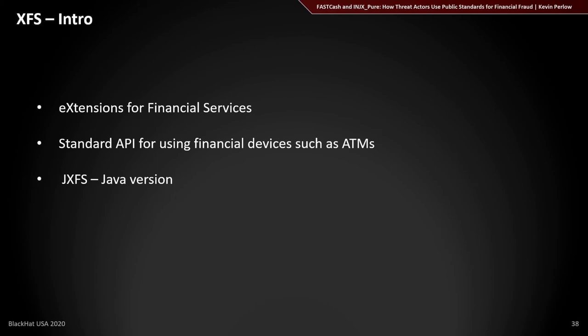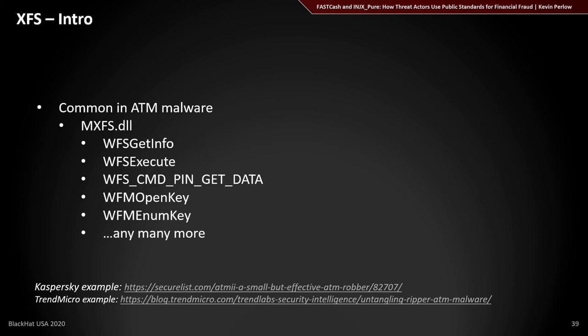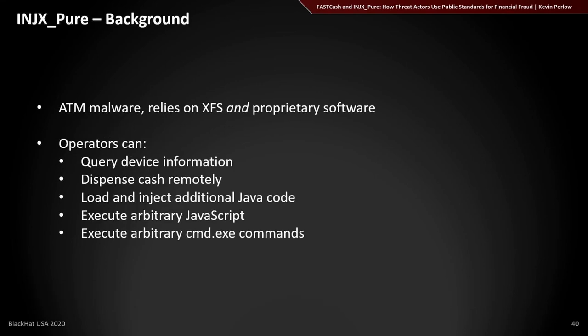Extensions for financial services is a standardized API for how software vendors should write software to interact with ATMs — covering cash withdrawal, deposits, indicator lights, and so on. We're looking specifically at JXFS, Java extensions for financial services. If you're interested in traditional XFS malware, there are links and common API calls on screen, though none of those specific calls appear in this particular family. Our focus is the InjectsPure malware family.